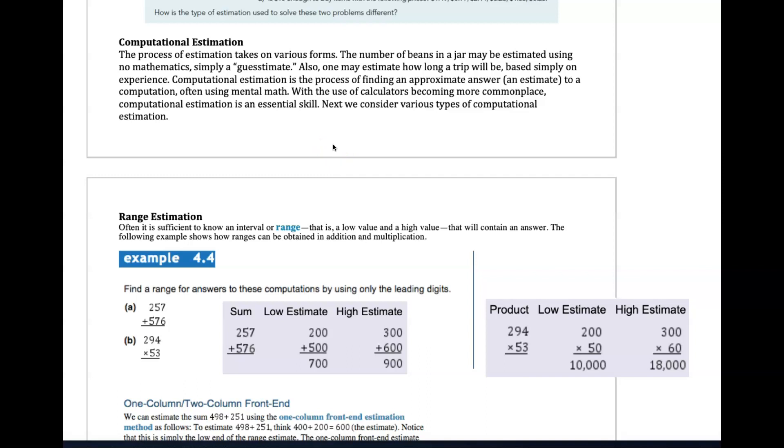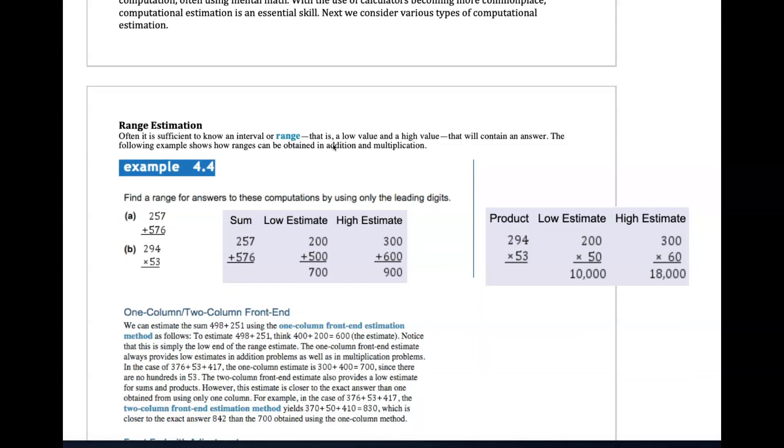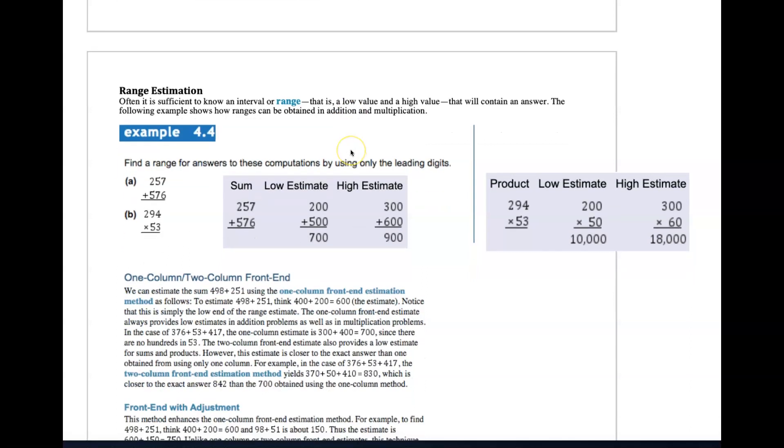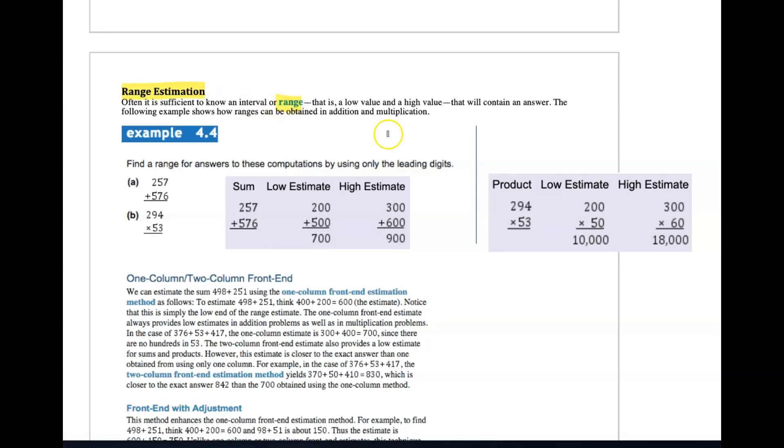We want to have some sense of what the value is, like buying a car, buying a house, making big purchases. We want to have some sense that the answers we're being given are reasonable, and that's what estimating will do for us. The first type of estimation we look at is called range estimation.